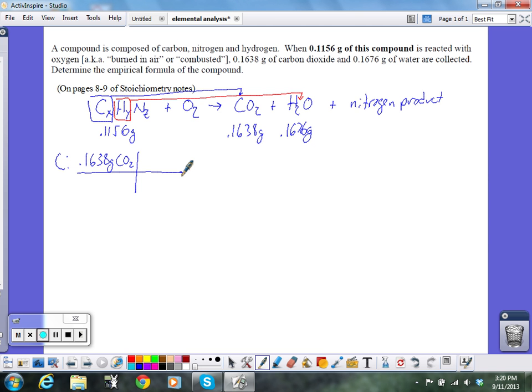So to figure out just information about the carbon, the very first thing is I have to convert this to moles. So 1 mole of CO2 is 44.01 grams of CO2. And that gives me 0.003722 moles of CO2. So when I look at this formula, I know there's 1 mole of carbon for 1 mole of CO2. So that must mean there are also 0.003722 moles of carbon.